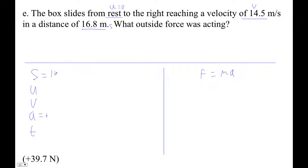Okay, so our displacement is 16.8. I believe it says distance, so it could be positive or negative. But because it starts from rest, slides to the right, and reaches that velocity to the right, it's definitely a positive 16.8.